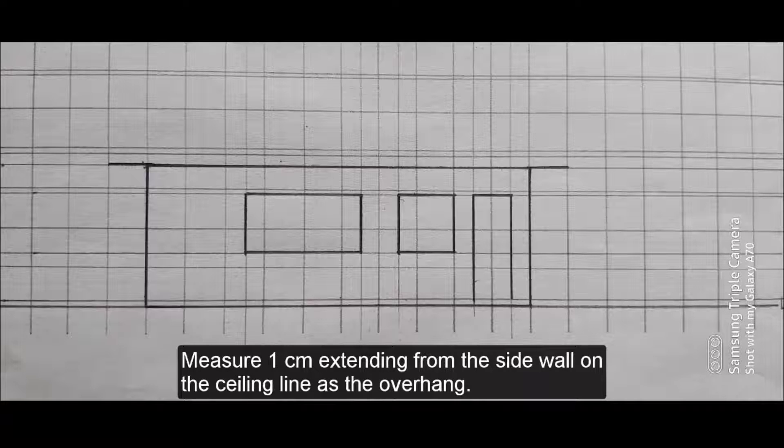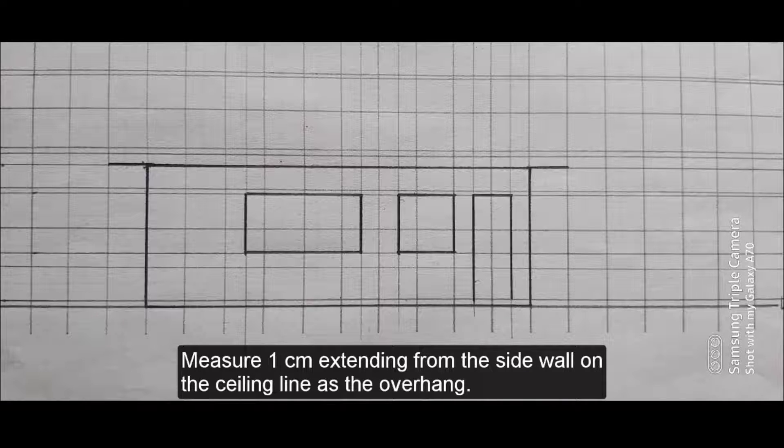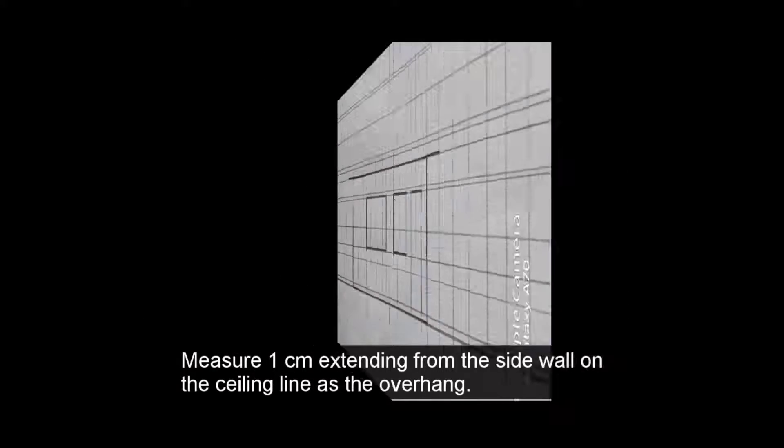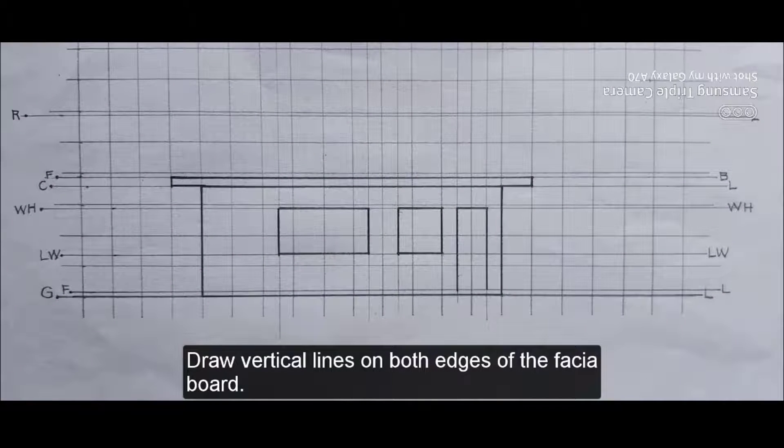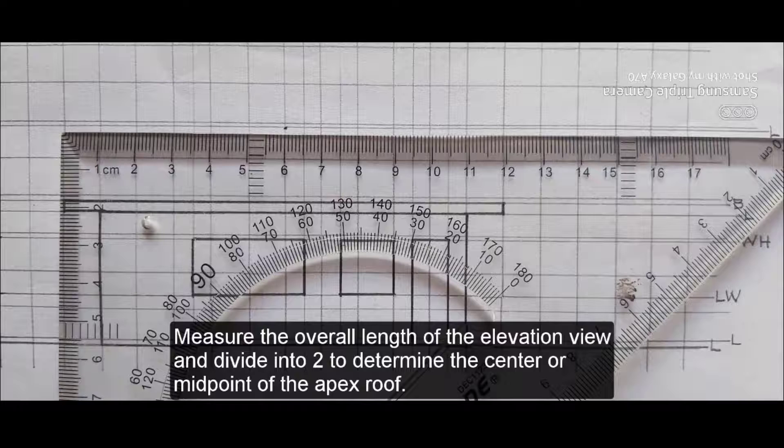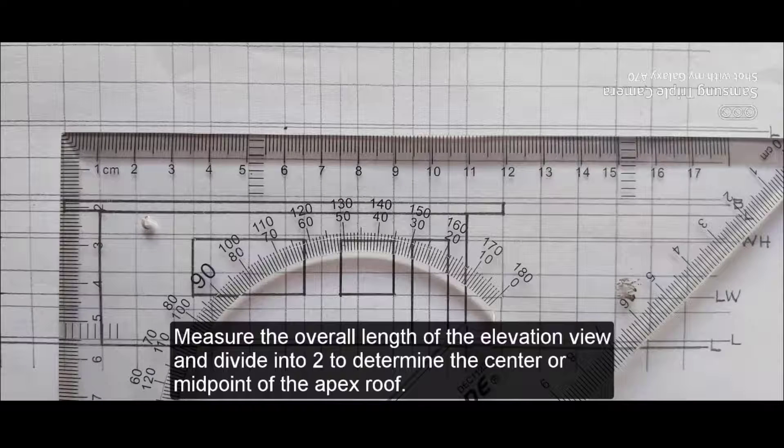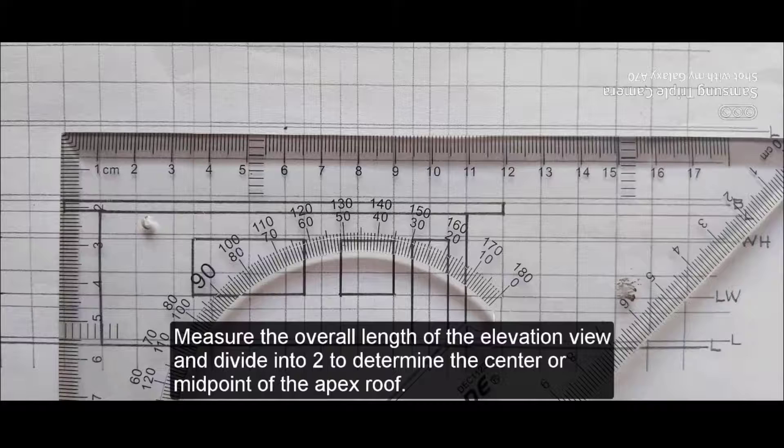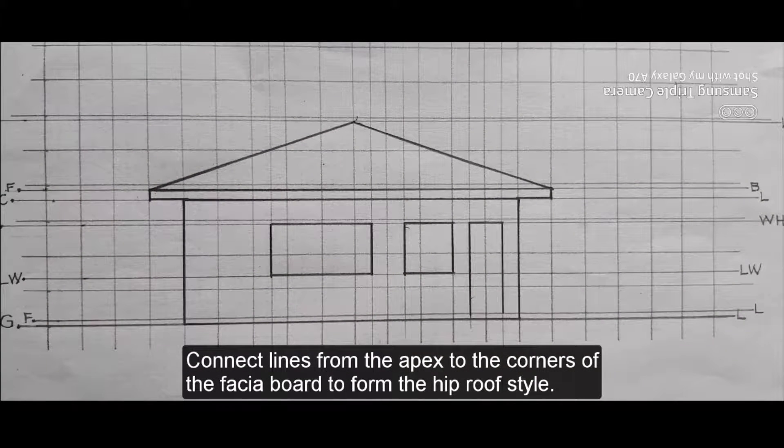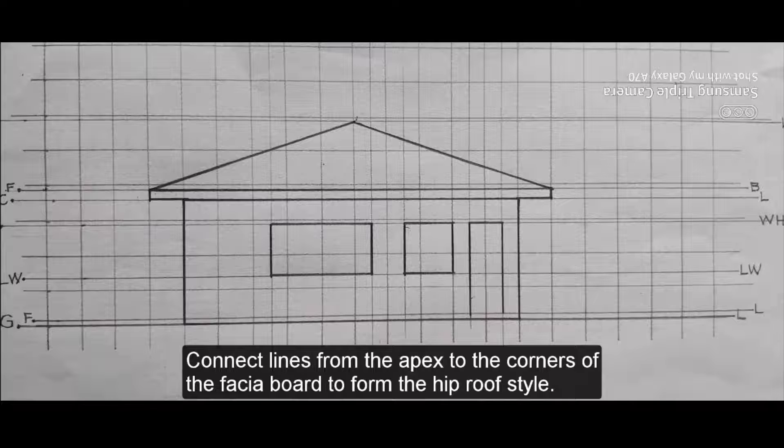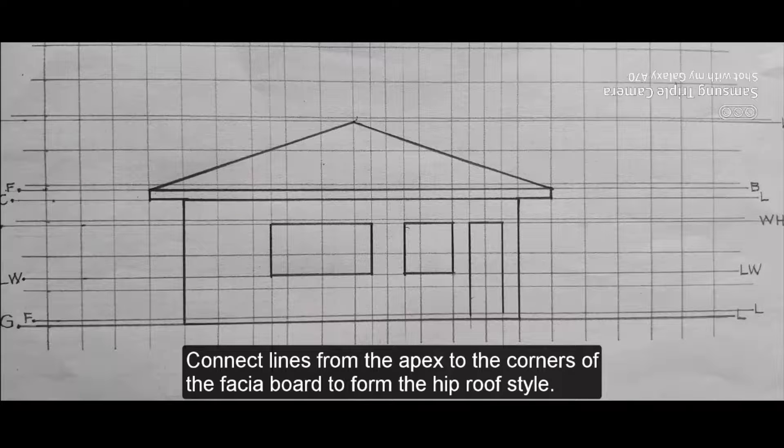Measure 1 cm extending from the side wall on the ceiling line as the overhang. Draw vertical lines on both edges of the fascia board. Measure the overall length of the elevation view and divide into 2 to determine the center or midpoint of the apex roof. Connect lines from the apex to the corners of the fascia board to form the hip roof style.